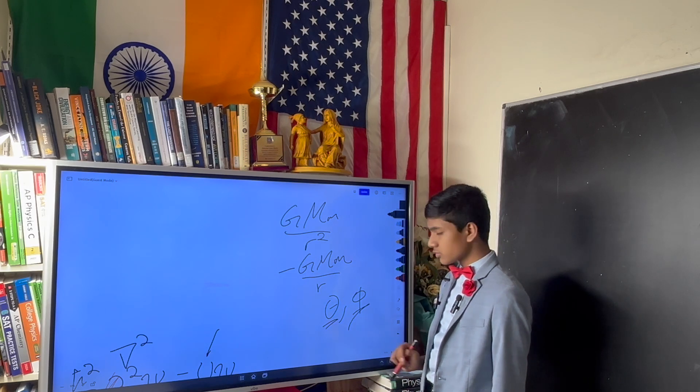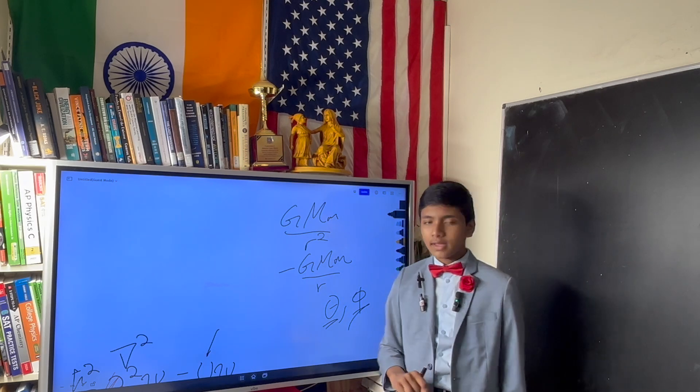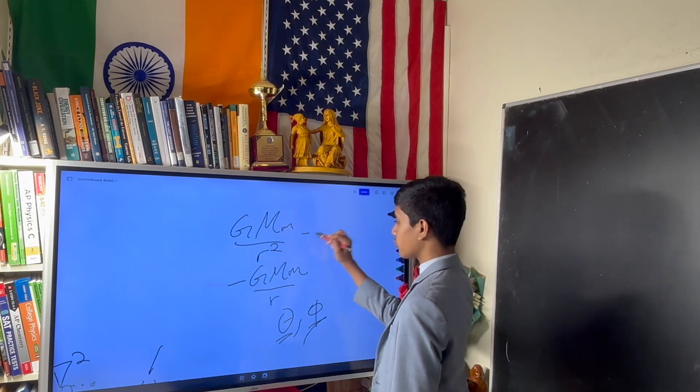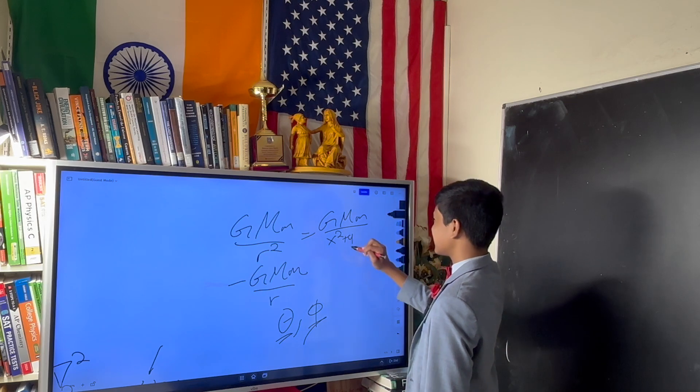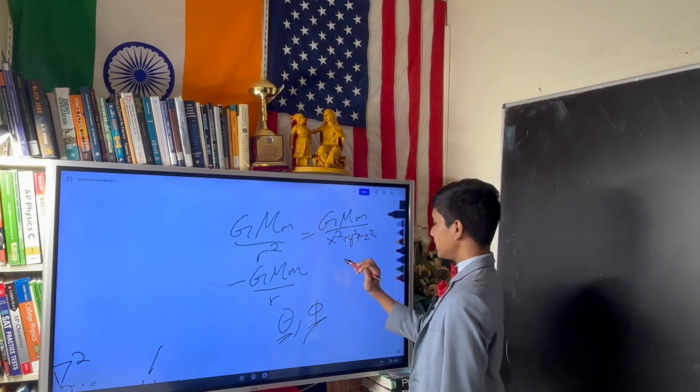If I have the gravitational force Gmm over R squared, the potential is inevitably going to be minus Gmm over R. But, do we even see any components of theta or phi here? If we switch to spherical coordinates, which we need for the radius, do we see any of the other two components here?